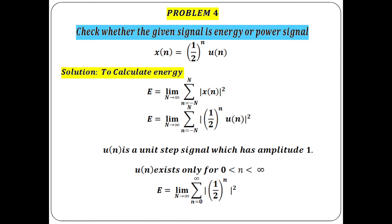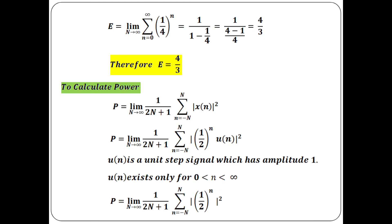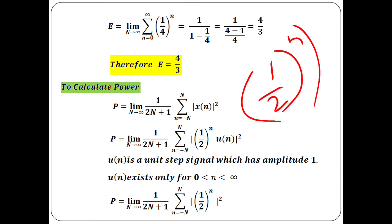Problem 4: Check whether the given signal is energy or power. This is a discrete-time signal: x[n] = (1/2)^n · u[n]. Write the energy formula: limit N→∞ of summation n = −N to N of |x[n]|². Since u[n] is a unit step signal existing only from 0 to infinity, change the limit to 0 to infinity. Substituting (1/2)^n whole square gives (1/4)^n.